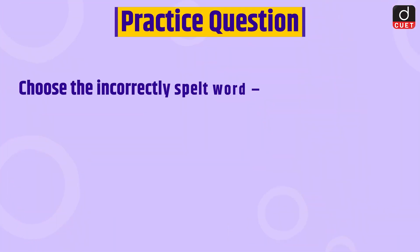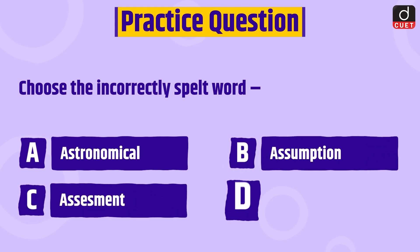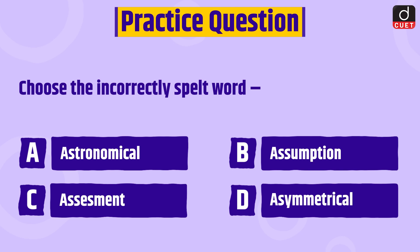Now it's time for the practice question. Choose the incorrectly spelt word, astronomical assumption, assessment or asymmetrical. Send the answer of this question in the comment section. Stay tuned for the next episode. Thanks for watching.